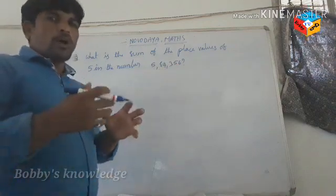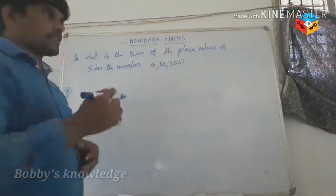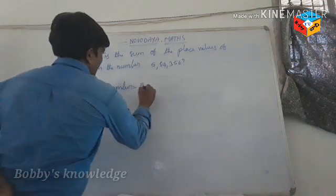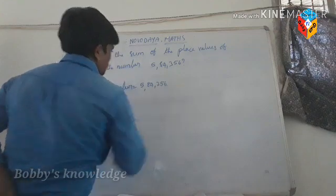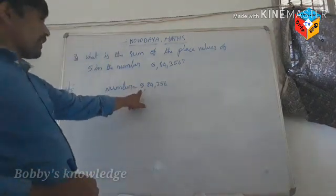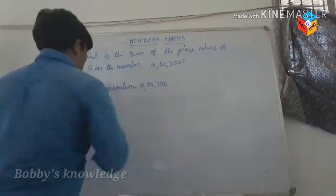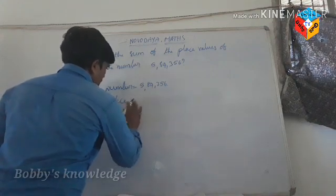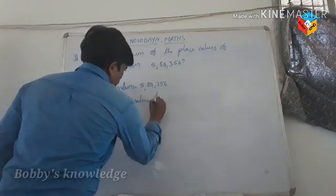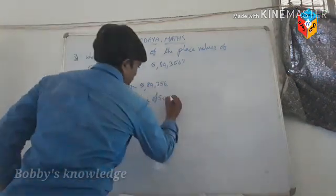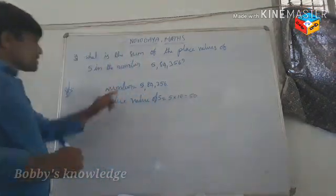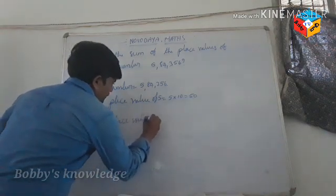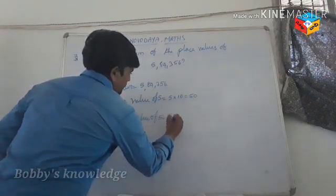How do you write in place value? The number is 584356. You will write the place value of 5. The first 5 is in the tens place. Place value of 5 in the tens place: 5 into 10 equals 50.